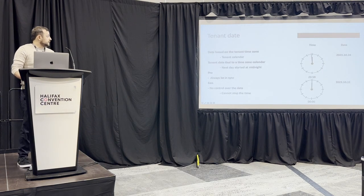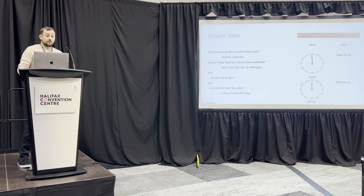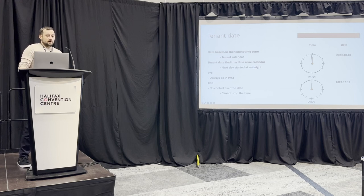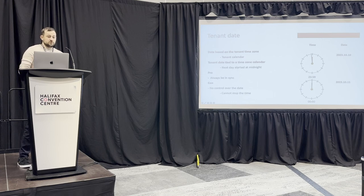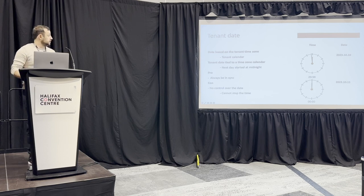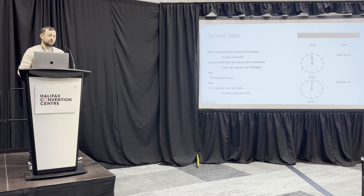The tenant date was based on the tenant time zone, so it was tied to the tenant calendar. The next day always started at midnight. As you can see in the example, just one minute before midnight the tenant date will be October 10th, but once physical time reaches midnight a new day starts and from that moment the date becomes October 11th. This was always in sync — you don't need to care about synchronization; it was always tied to the physical calendar.